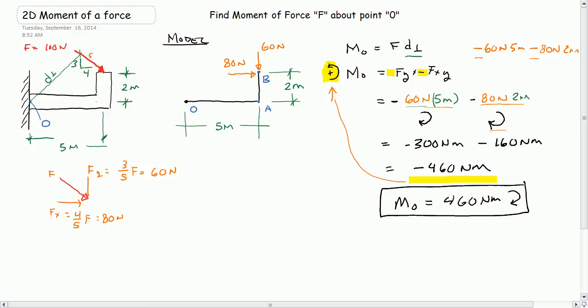What's also interesting here is we can actually determine this perpendicular distance from this equation up here by solving for perpendicular distance. So let's go ahead and do that just at the end here. Remember, if MO is equal to the force times the perpendicular distance, then the perpendicular distance is equal to MO divided by the force, which is equal to 460 newton meters divided by 100 newtons, and that gives us 4.6 meters. So this distance right up here would be 4.6 meters.